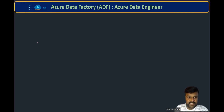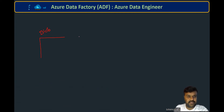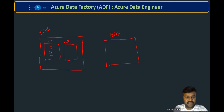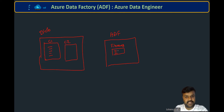So what we are trying to do is — in Blob Storage, we have a set of containers: container one and container two. In container one, we have a list of files. We want to fetch those file names, then take any particular file name into a variable. On top of this, we will cover a real-time scenario, and for this you must understand the JSON structure, which I explained in one of the previous videos.